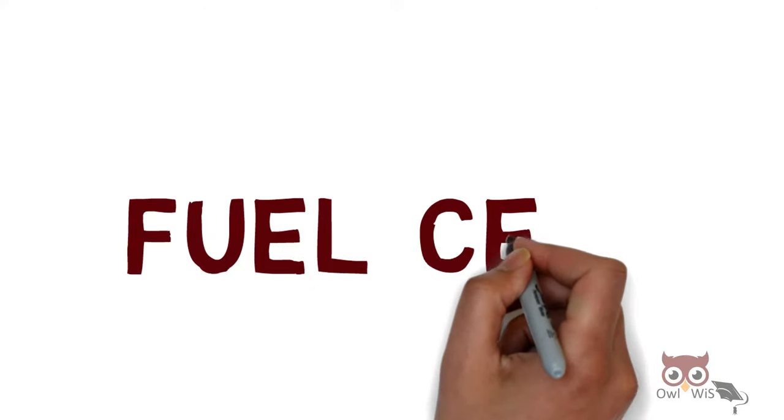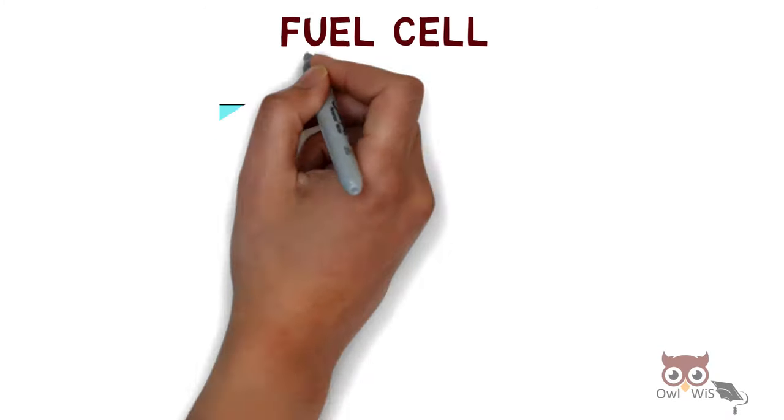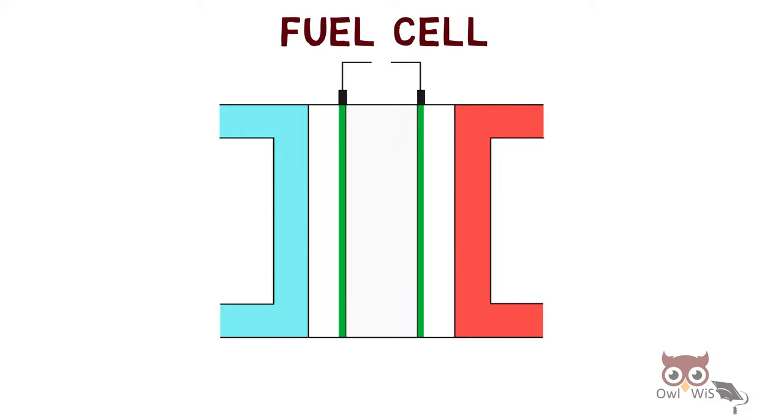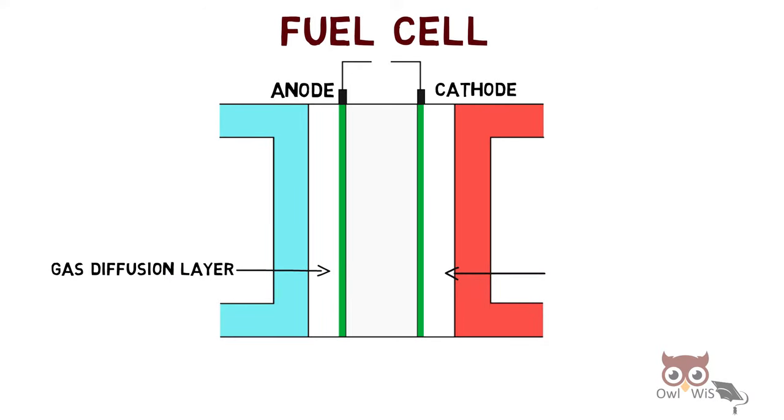Let us understand a basic fuel cell. It is similar to that of an electric cell which consists of anode and cathode. Each one of them consists of a gas diffusion layer which is coated with a catalyst made up of platinum.